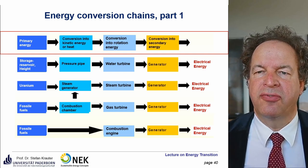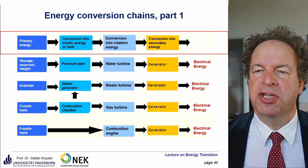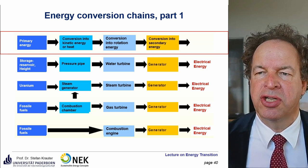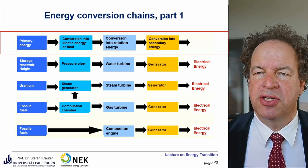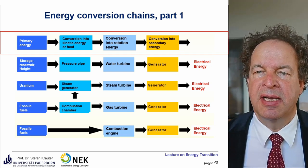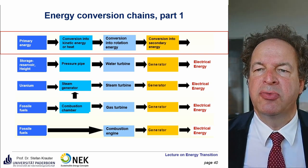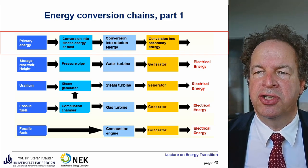Take the first example: we have a water reservoir, put it through a pressure pipe onto a water turbine, then we have rotation energy and convert that into electricity via a generator. For a nuclear power plant, we have a steam generator via a combustion chamber. Similarly for coal, lignite, or gas power plants — we generate steam, use a steam turbine to generate rotation energy, and feed that into an electrical generator to produce electrical energy.